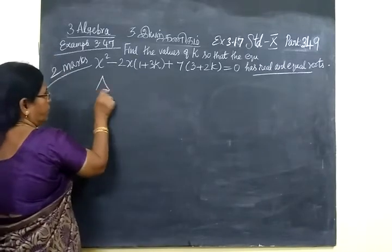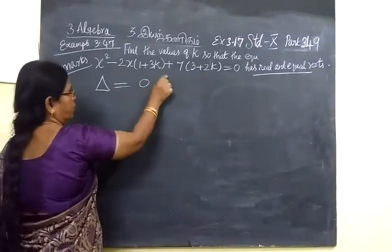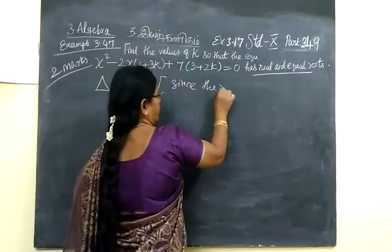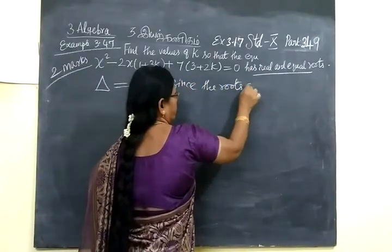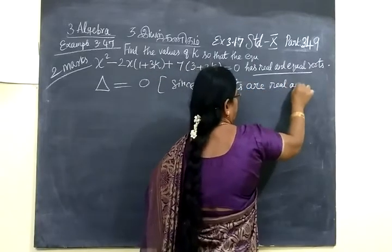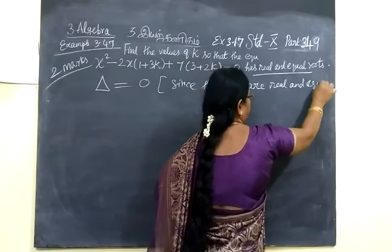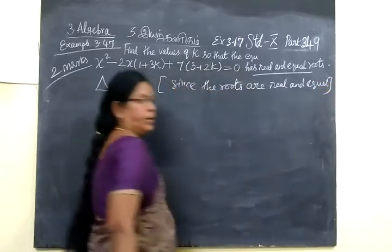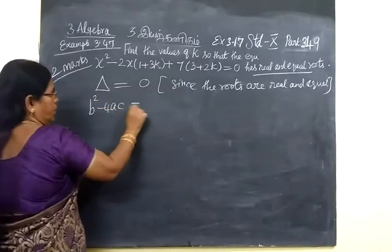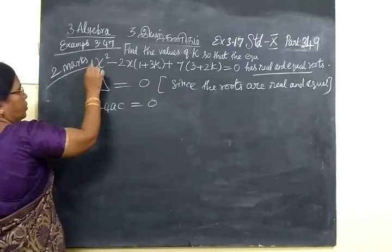If the roots are real and equal, we know delta equal to 0. So if the roots are real and equal, delta is B² minus 4AC equal to 0.